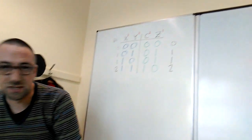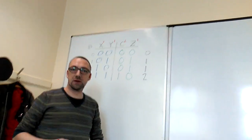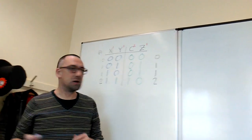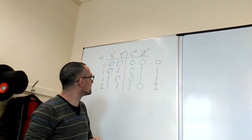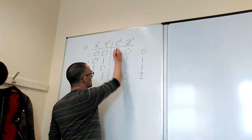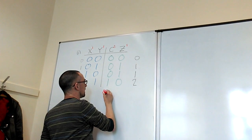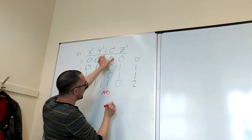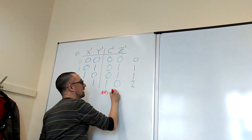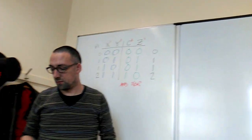Using the look-up method to figure out how to build one of these things from logic gates, we see that this is the truth table for AND, and this is the truth table for EXCLUSIVE OR. Job done.